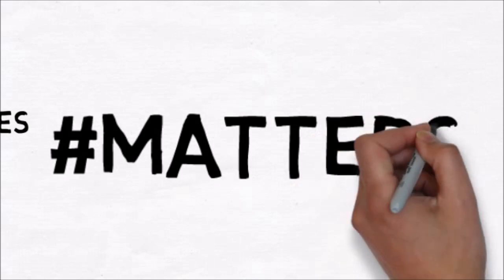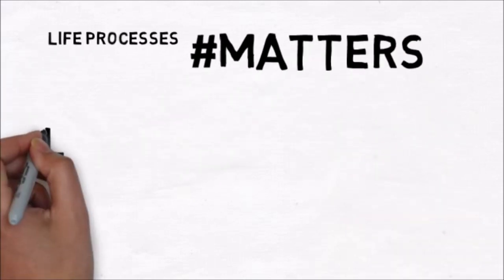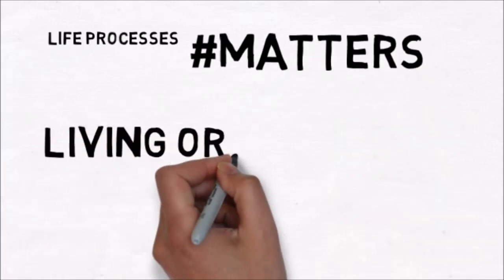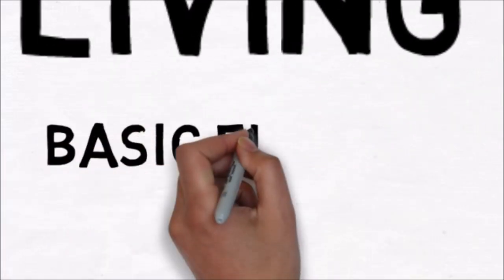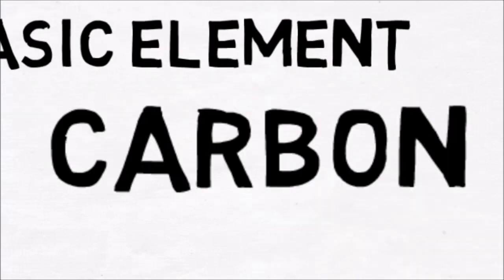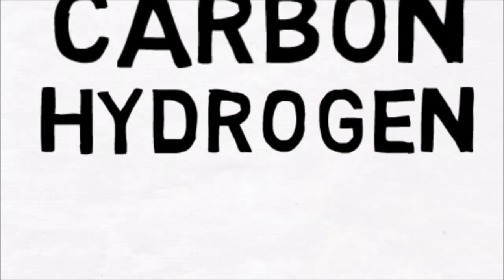Now as we all know, all the things around us are made up of matter. Matter can be either living or non-living. But both living and non-living things are made up of the same basic elements like Carbon, Hydrogen, Oxygen and Nitrogen.